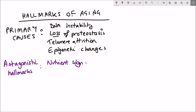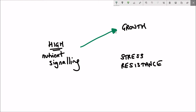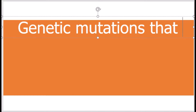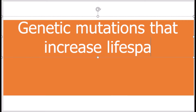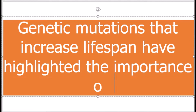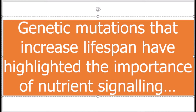First up is nutrient signalling dysregulation. Nutrient signalling is pretty much essential for a cell or organism to live. It's when nutrient signalling is too high or deregulated that it can promote the ageing phenotype. Much of the understanding of nutrient signalling pathways in ageing has come from genetic mutations in genes involved in these pathways that, when mutated, either altered the lifespan or the healthspan of the organism.